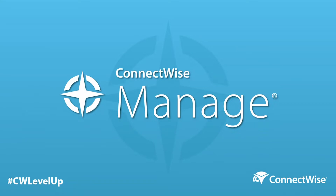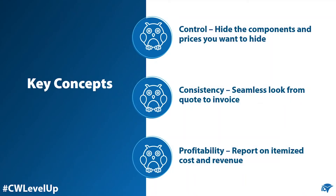This feature applies to ConnectWise Manage and the ConnectWise Sell product. Key concepts behind Invoice Grouping include the ability to have more control over the look of your invoices, consistency from the look of your quotes all the way through to your recurring invoices, and profitability, as you can still report on itemized costs and revenue. Often folks may not want to show itemized costs for services when their customers are really paying for a package.